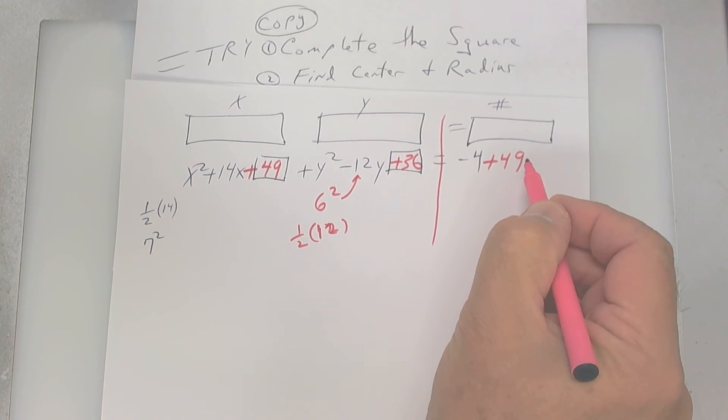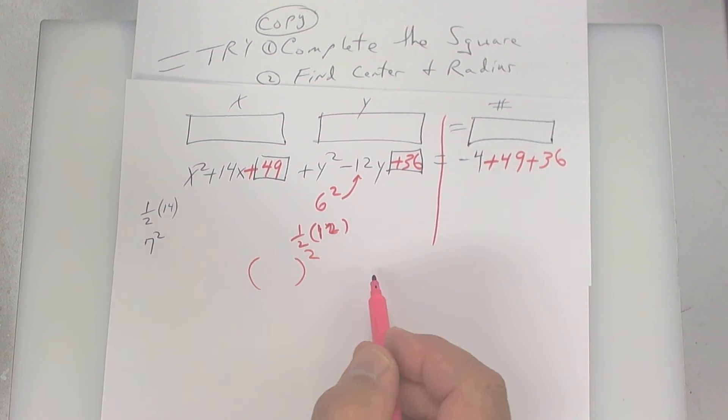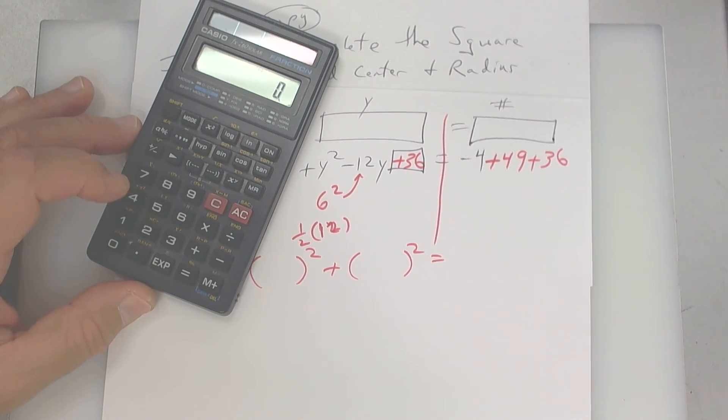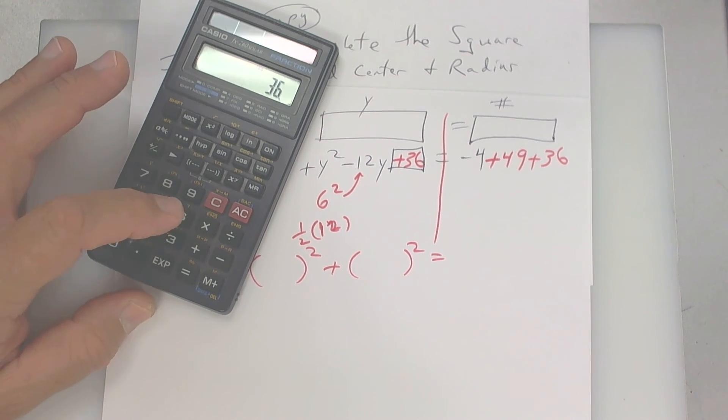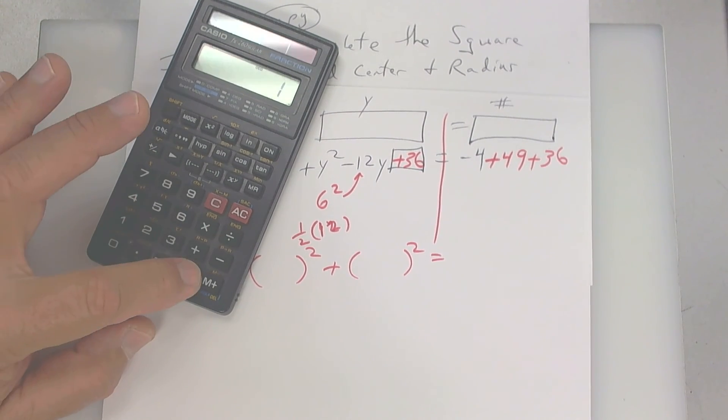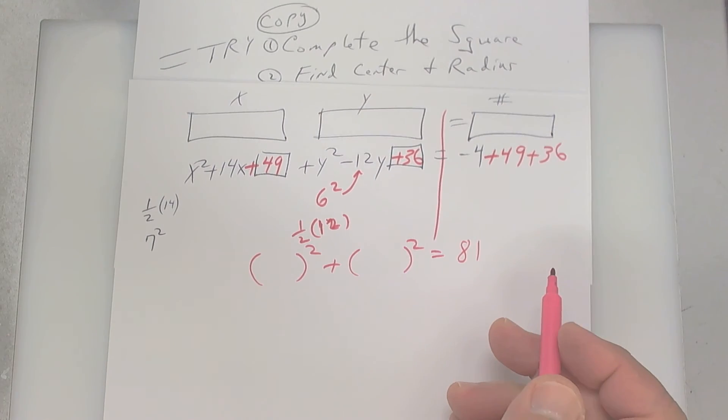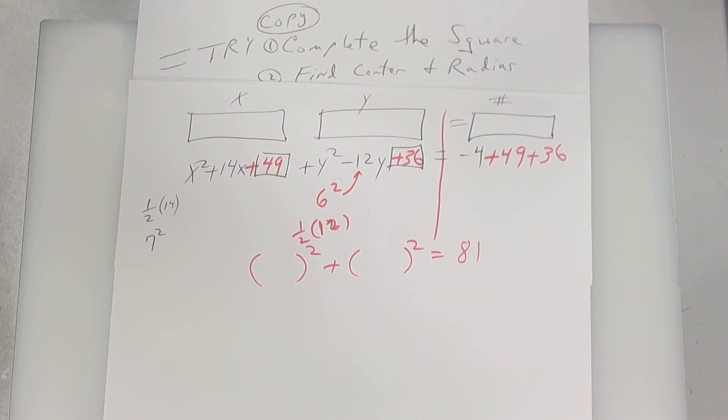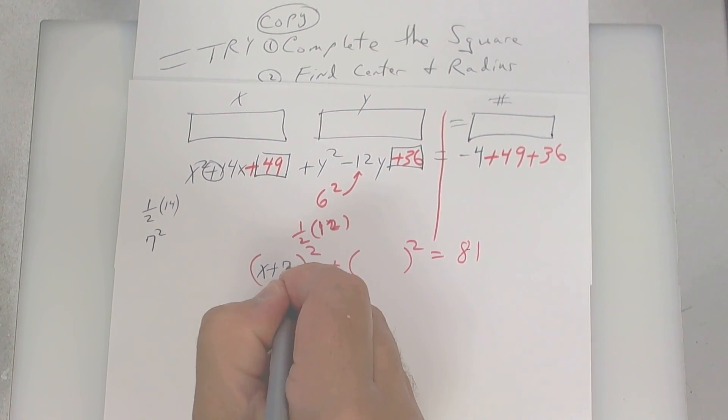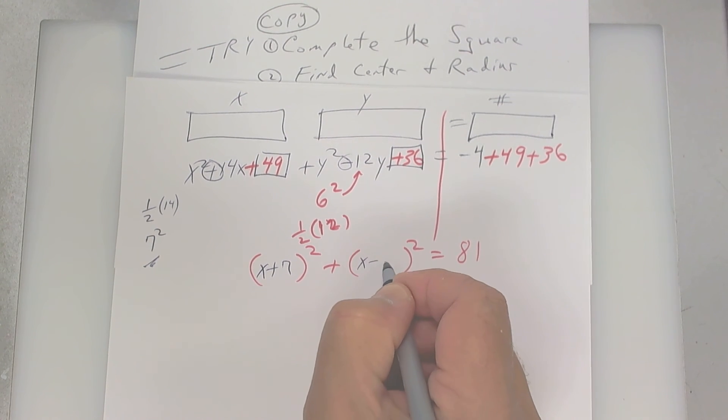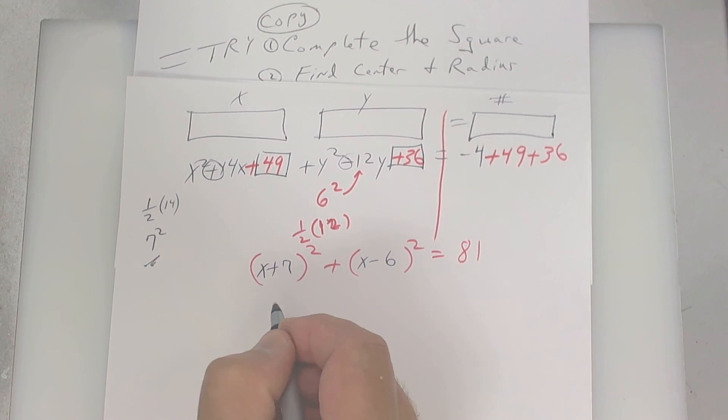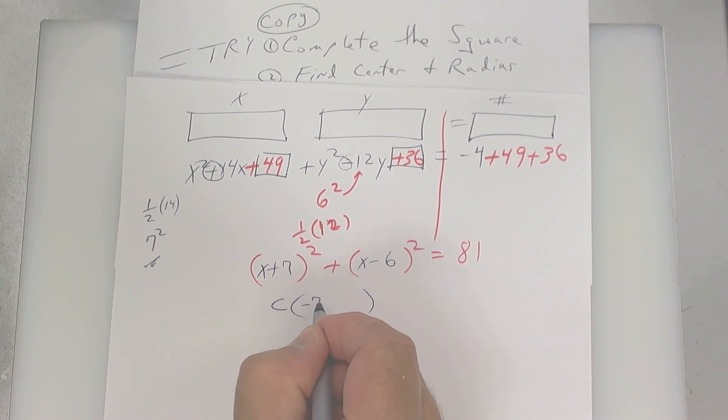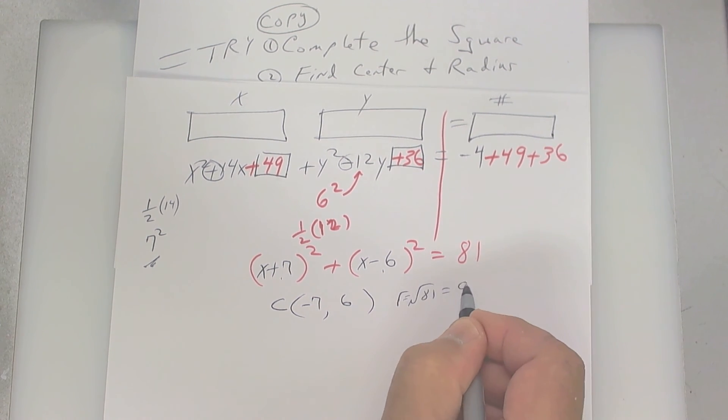And then anyway, you're going to add 36 over here, and let's see what happens. This becomes a perfect square, this other one becomes a perfect square, and I don't know what's left there. So let's see if I can do it. I'm going to say 81, but I don't know. So 49 plus 36 minus 4 is 81. Okay, good. Now remember, this one's a plus, so it's going to be x plus 7. This one's a minus, so it's going to be y minus 6. So the center of the circle is going to be opposite, opposite, square root. So the opposite, the opposite, and the square root of 81 is 9. So the radius is 9.